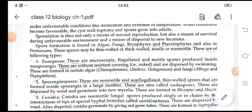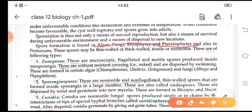This spore formation, it is found in algae, fungi, bryophyta, pteridophytes and also in protozoans. The spores, they may be thin walled or thick walled. They may be motile or non-motile. That means, they show mobility or non-mobility. According to the thin walled, thick walled, motile or non-motile, the spores are again divided into several types.